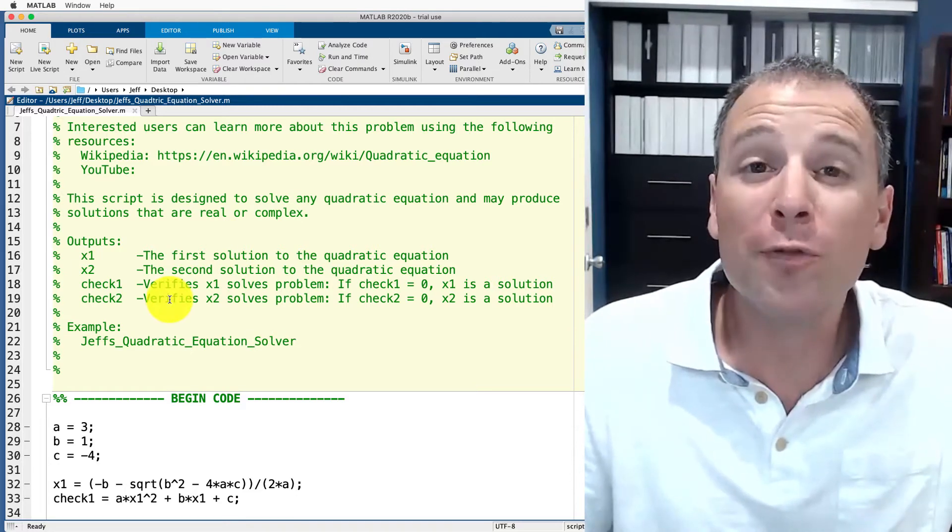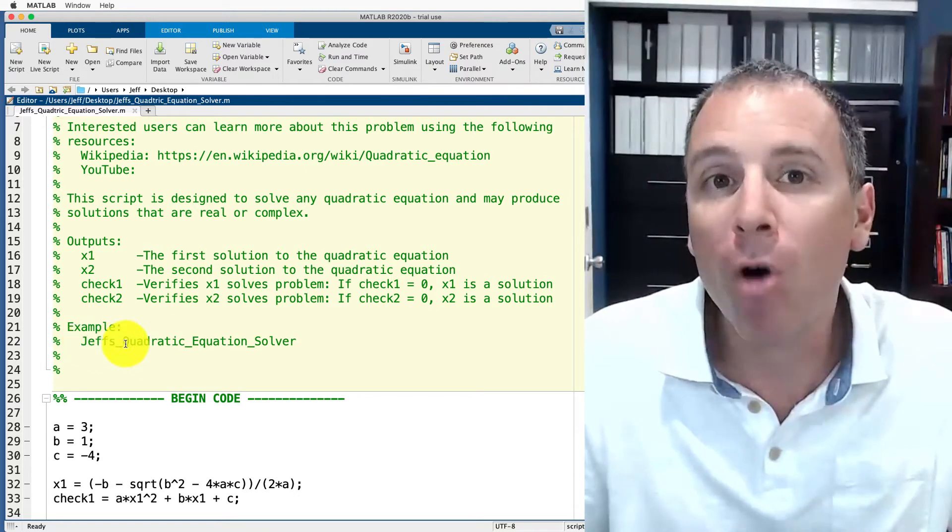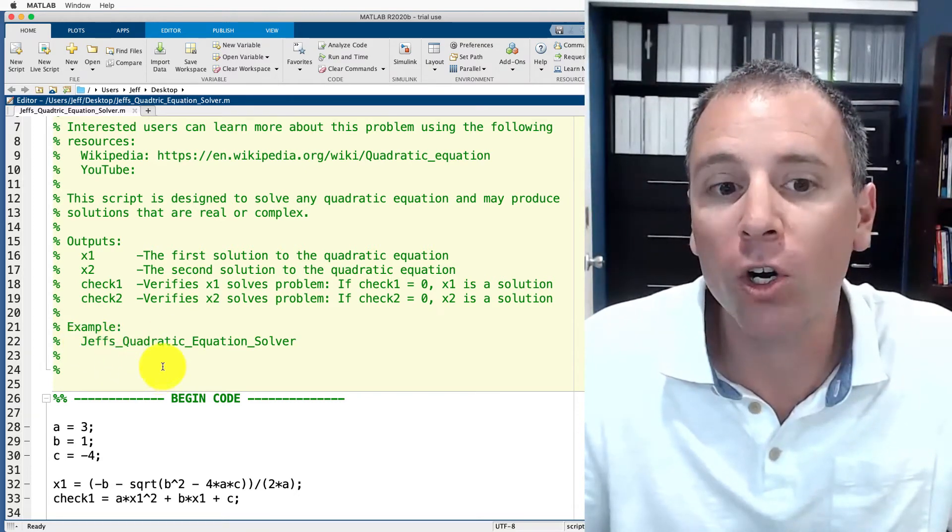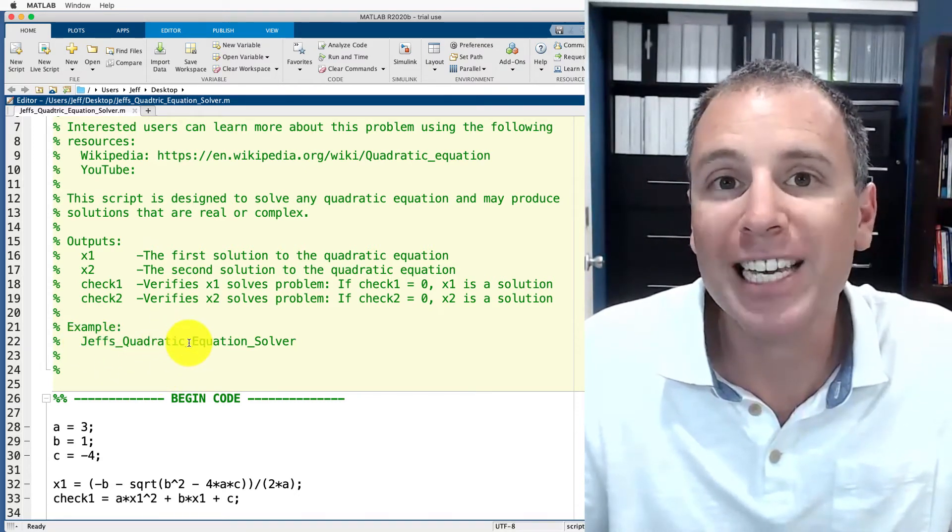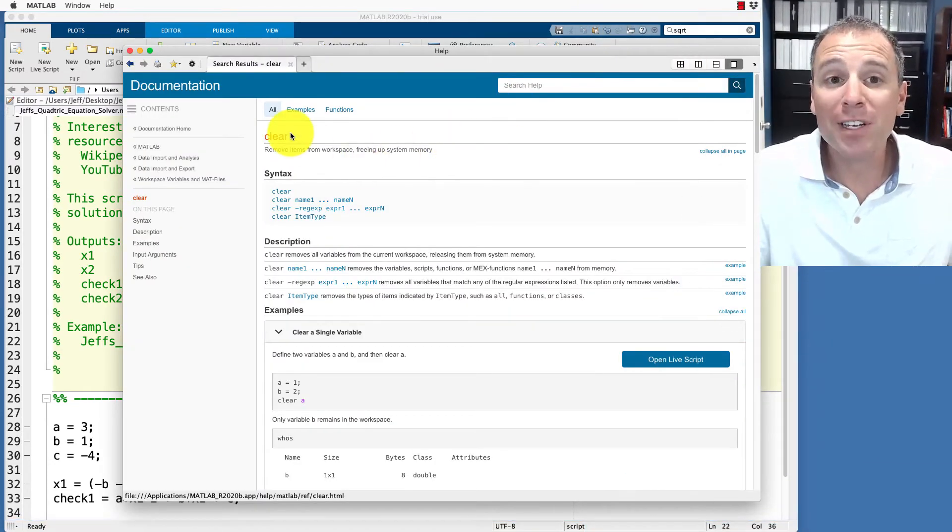Later when we use functions and those functions might have multiple inputs, we actually might have multiple different ways to call our code and this is where we would document each of those individual calls as well as what they do. We've seen examples of this in MATLAB's documentation when we looked at the clear function.